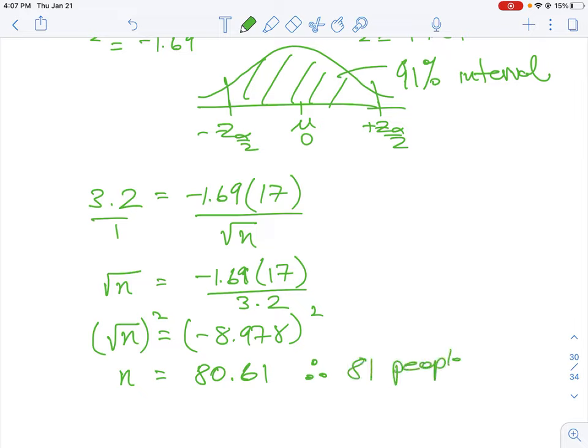Therefore, we would need at least 81 people in the sample, or whatever we're counting. It doesn't matter which z score we use; we could use plus 1.69 and it'll still be the same because we're squaring the term.